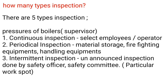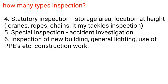How many types of inspections are there? There are five types: 1. Continuous inspection (by selected employees/operators). 2. Periodical inspection (material storage, firefighting equipment, handling equipment). 3. Intermittent inspection (unannounced, done by safety officer and safety committee). 4. Statutory inspection (storage area, locations at height, cranes, ropes, chains, and lifting tackles). 5. Special inspection (accident investigation, inspection of new buildings, general lighting, use of PPE, construction work).